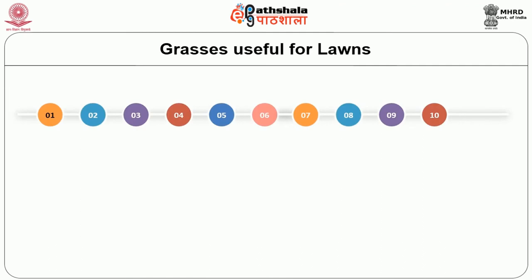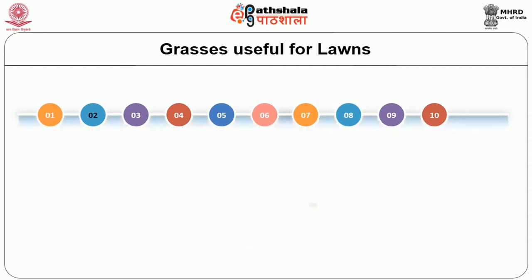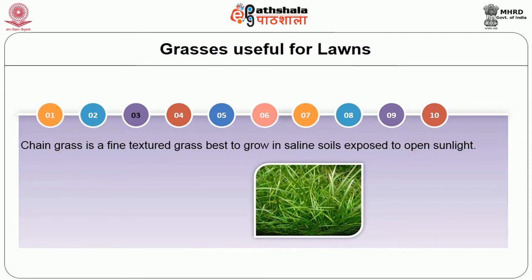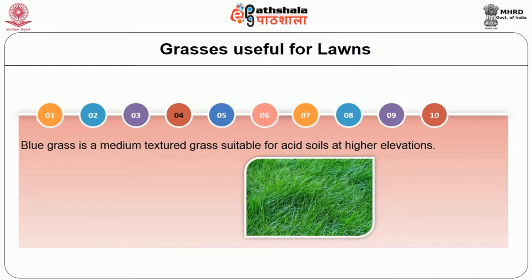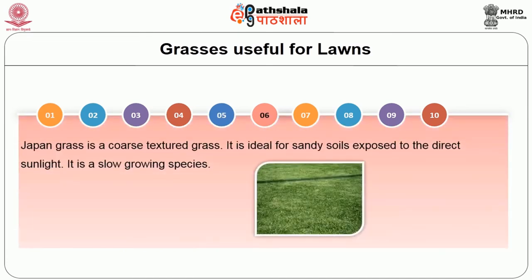Other grasses also recommended for making lawns are: Cynodon dactylon, a medium textured grass suitable to grow in open sunny places, and it is a drought resistant species. Then Buffalo grass or St. Augustine grass, a coarse textured grass useful to grow in shady places. Cenchrus grass is a fine textured grass, best to grow in saline soil exposed to open sunlight. Blue grass is a medium textured grass suitable for acid soil at higher elevations. Poa grass is a rough grass best for acid soils at higher elevations. Japan grass is a coarse textured grass, ideal for sandy soils exposed to direct sunlight. It is a slow growing species.